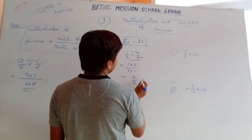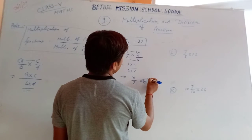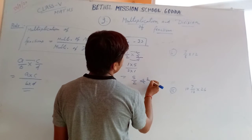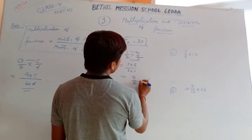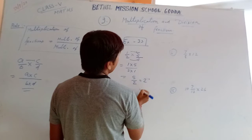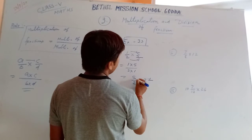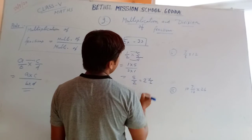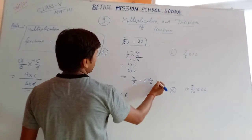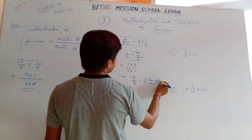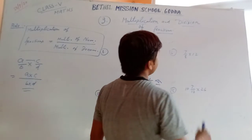So the answer is 5 upon 2. If the answer is given as a mixed fraction, you can also write it as: when you divide 5 by 2, you get 2 with remainder 1, so the answer is 2 and 1 upon 2.